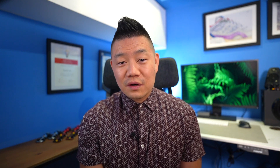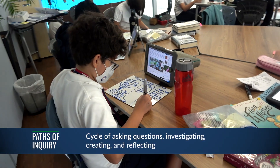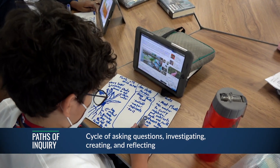After the provocation, students generated questions that could fit in three categories. The first category would be about the cause of algal bloom — what is algal bloom and what is causing it. The second category would be about plant growth — what is making the algae grow and how does that work. The third category would be about water contamination and how that affects the environment — how does this affect other parts of the ecosystem and what are the consequences? Each of these categories focused on at least one NGSS standard and led to paths of inquiry: a cycle of asking questions, investigating, creating, and reflecting.